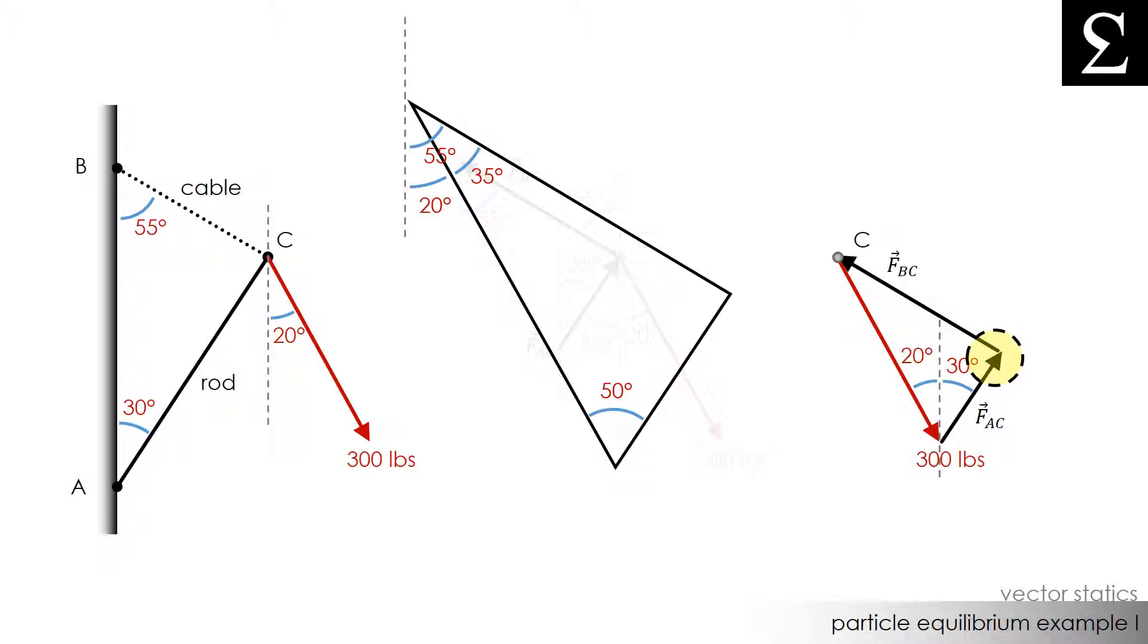Finally this last angle should not be too much of a problem. Since we know that the interior angles of a triangle all need to add up to 180 degrees this angle here is simply 180 degrees minus 35 degrees minus 50 degrees which is 95 degrees.